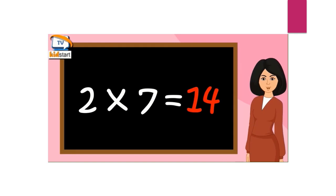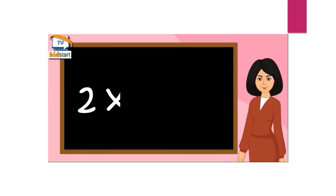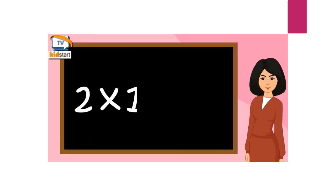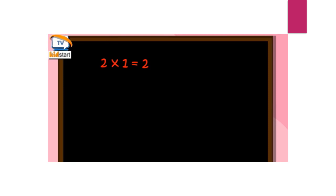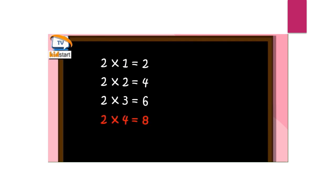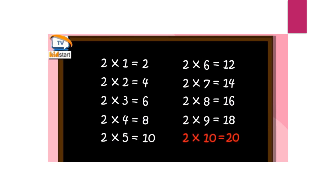Two ones are two. Two twos are four. Two threes are six. Two fours are eight. Two fives are ten. Two sixes are twelve. Two sevens are fourteen. Two eights are sixteen. Two nines are eighteen. Two tens are twenty.